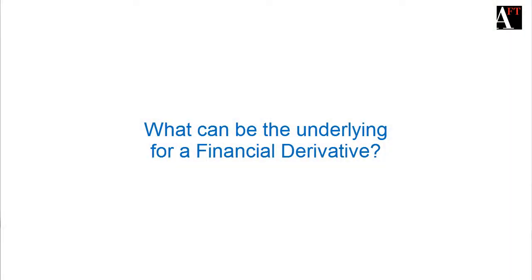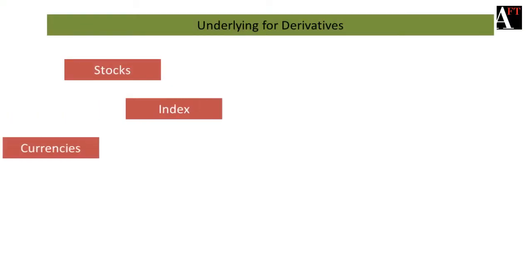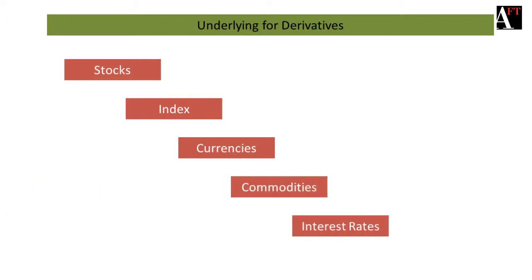What can be your underlying? Your underlying can be the stock market, your stock, your index, your currency, a commodity, or an interest rate. These all can be your underlying, and derivatives derive their value from this particular underlying.